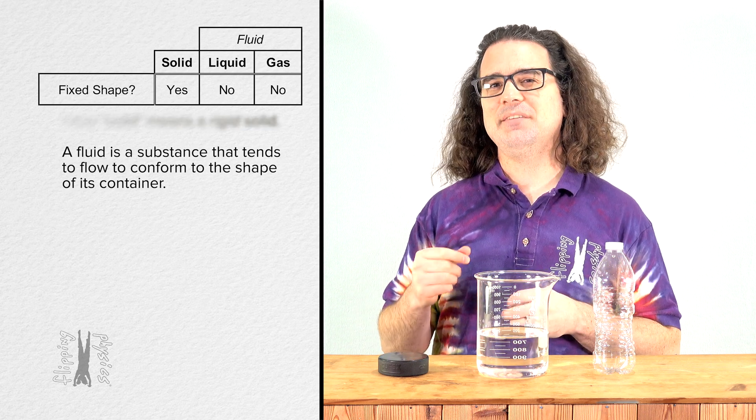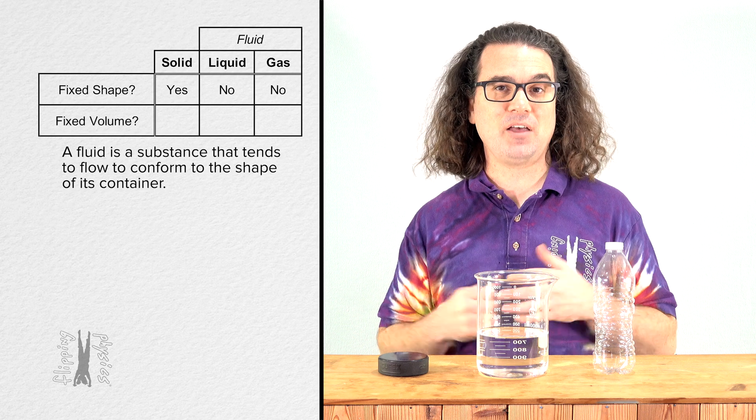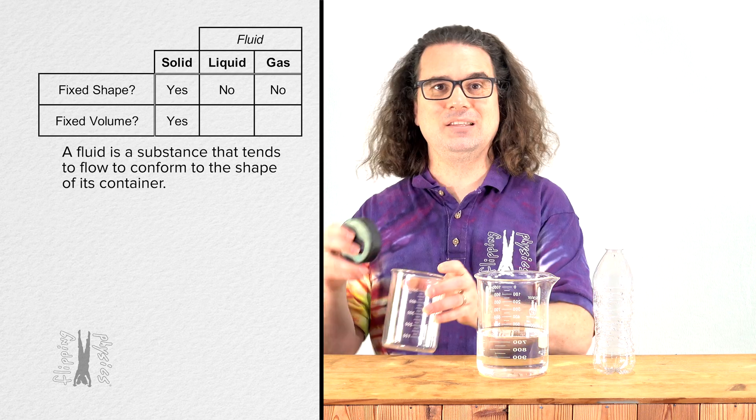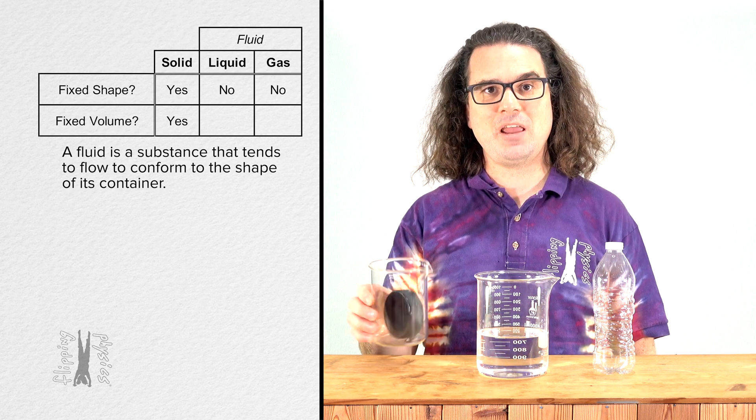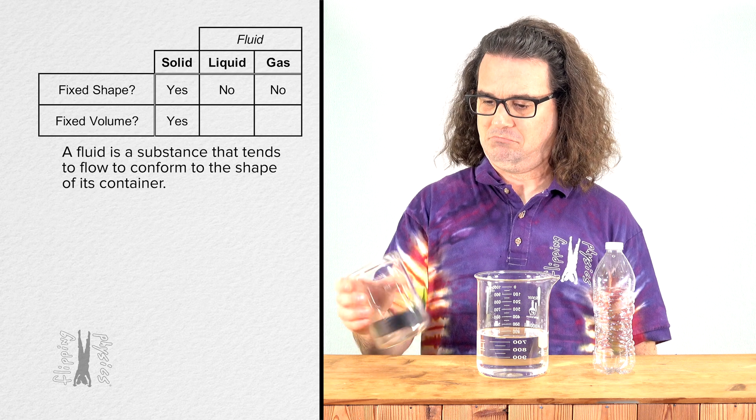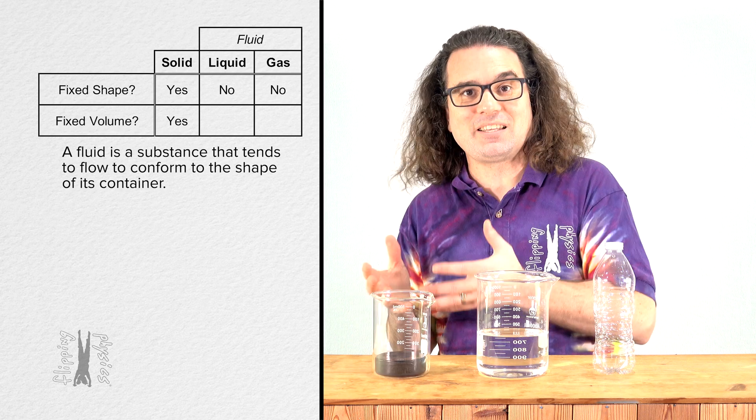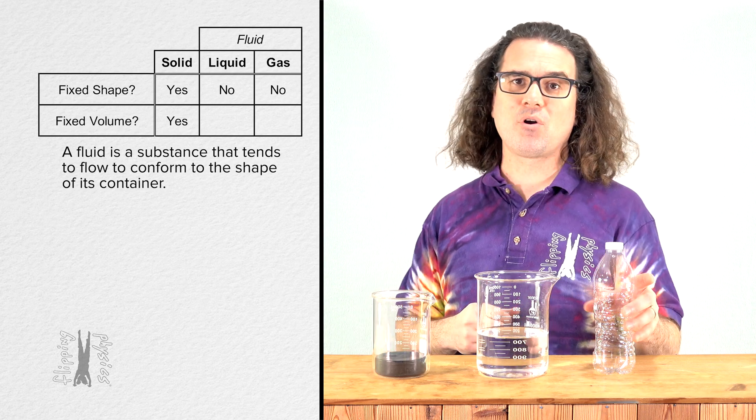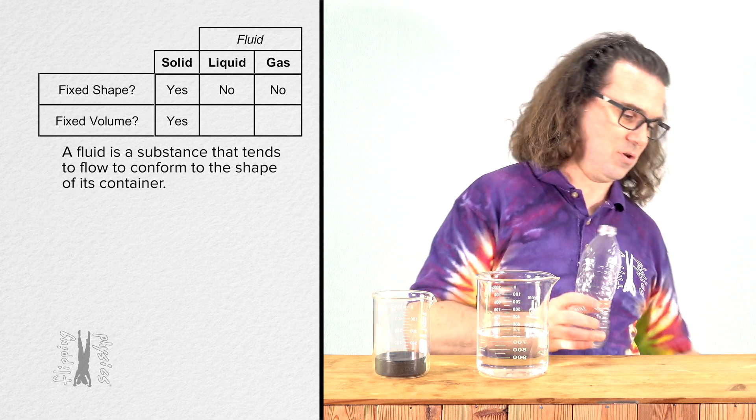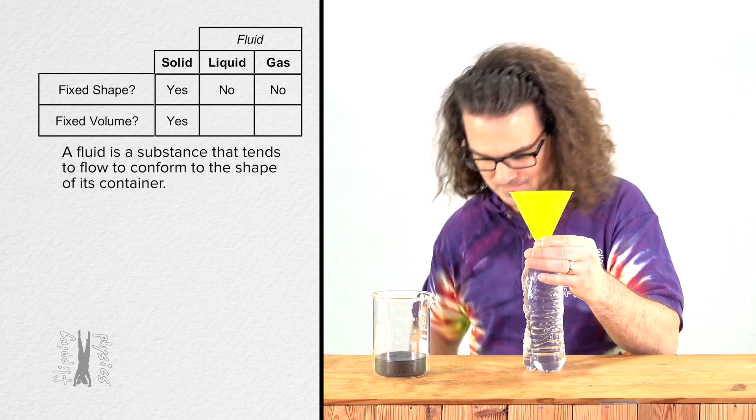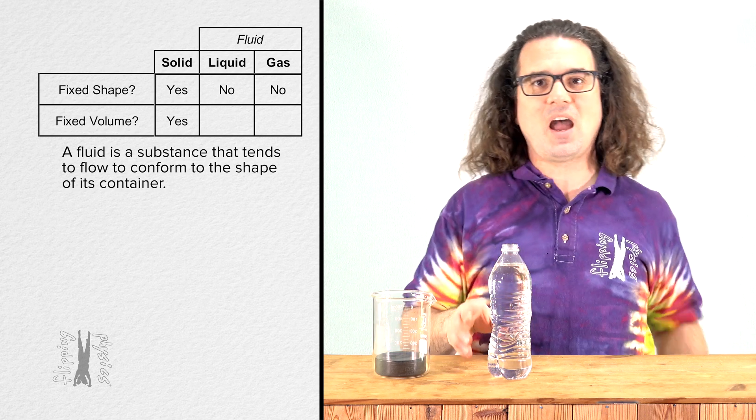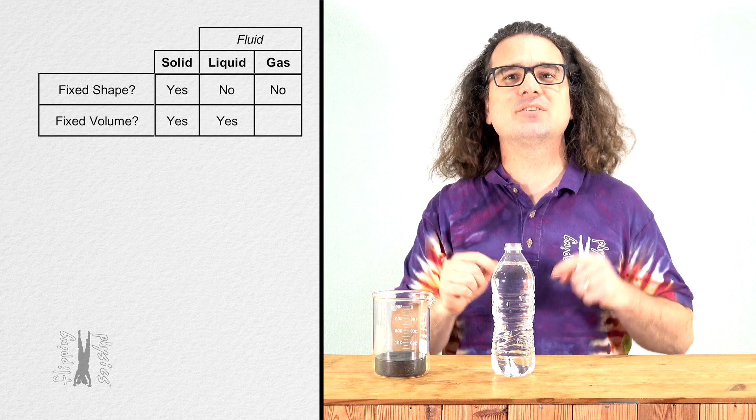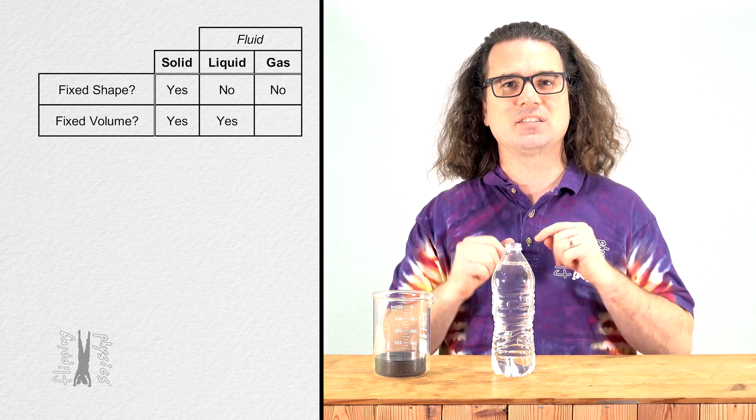The next line in our table identifies if the state of matter has a fixed volume. Solids have a fixed volume. For example, when I place the hockey puck into a beaker, it does not take the shape of the beaker because it is a solid and solids do not change shape or volume. However, when I pour the water back into the bottle, the water does take on the shape of the bottle, but it does not completely fill the bottle because the volume of the water, which is a liquid, does not change.